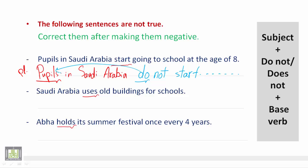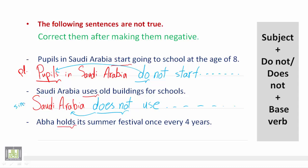In the second example — في المثال الثاني — we have a singular subject — الفاعل مفرد. So we will see how we make it negative differently. 'Saudi Arabia' — because it is singular — لأنه عبارة عن الفاعل مفرد — we use 'does not,' and we change the verb back to its base form — نعيد الفعل دون أي إضافات إلى شكله الرئيسي. So we say 'does not use...' We used 'does not' because we have a singular noun.